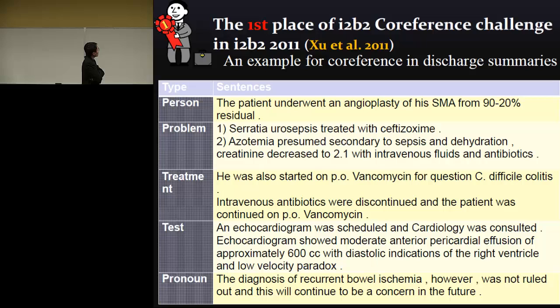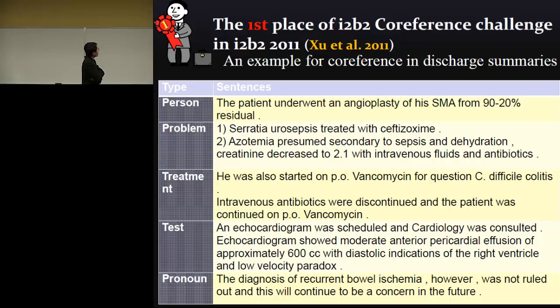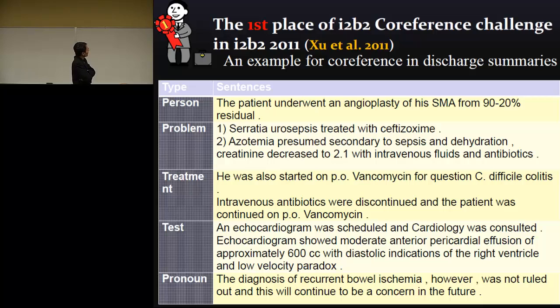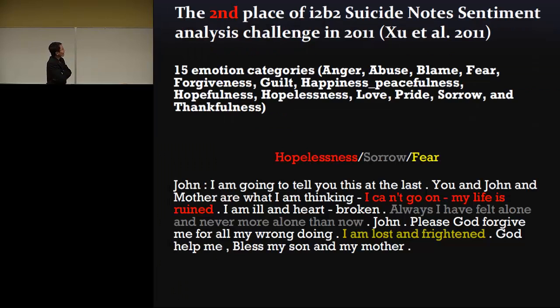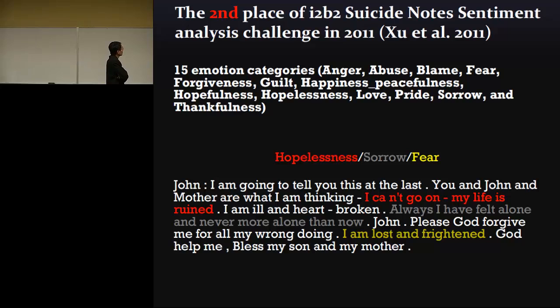Two years ago, our group attended the I2B2 competition for two text tasks: suicide note analysis for sentiment, and co-reference resolution for medical document discharge summaries. With about 50 international groups attending, we won first and second prize. One reason was that we explored a large amount of internet data — extracting 20 million documents from various Wiki and other sources to learn our dictionary for prediction.